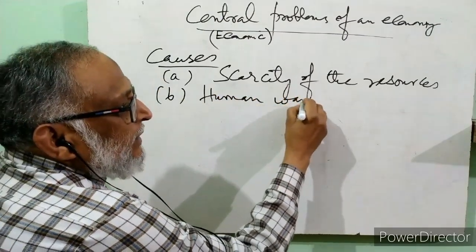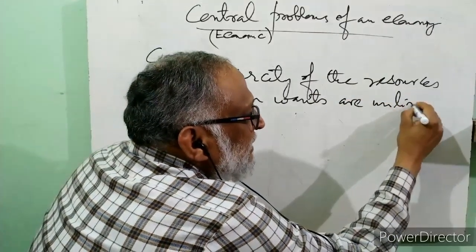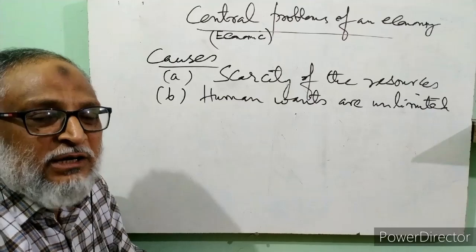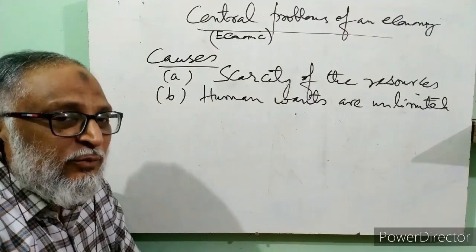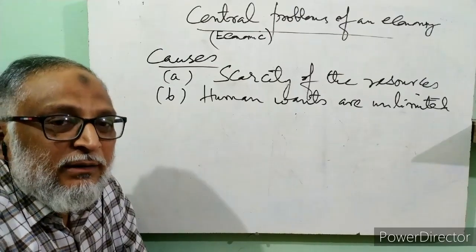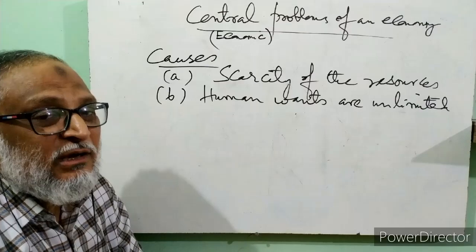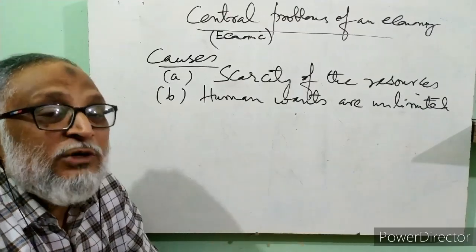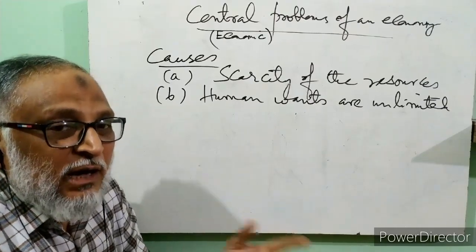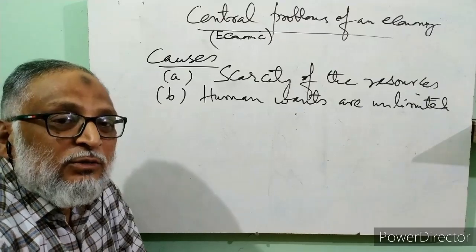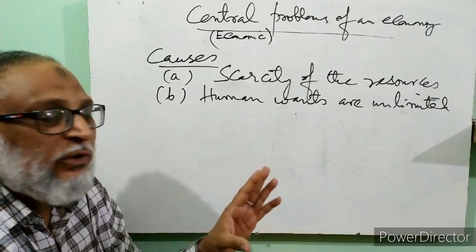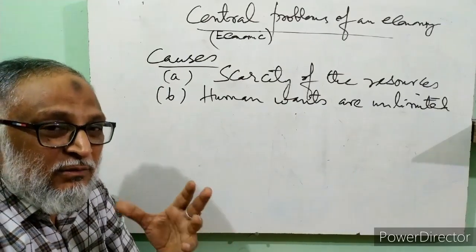The second main cause is human wants are unlimited and endless. Our desires have no end. When one desire is fulfilled, another arises. There is no saturation or contentment. For example, a person walking on foot desires a cycle. When he gets a cycle, he desires a bike or scooter. Then he wants a car for more comfort. Our desires have no end - he may even want a helicopter or aeroplane. This is why problems increase and we cannot fulfill all our needs.